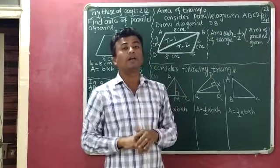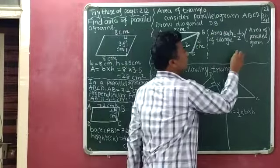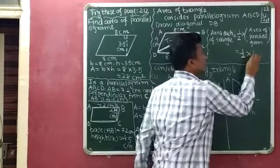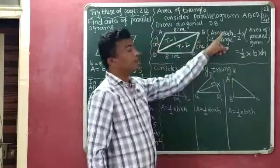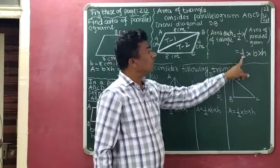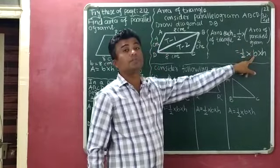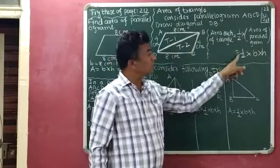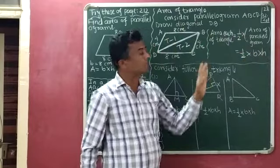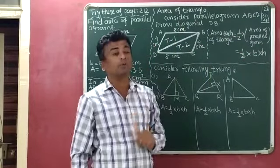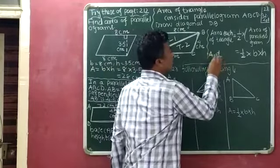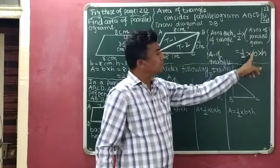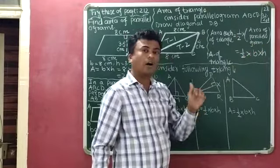We know the formula for the area of a parallelogram is B multiplied by H. So the formula to find the area of a triangle is one-half multiplied by B multiplied by H, where B is the base of the triangle and H is the height of the triangle. Area of triangle is equal to one-half multiplied by B multiplied by H.